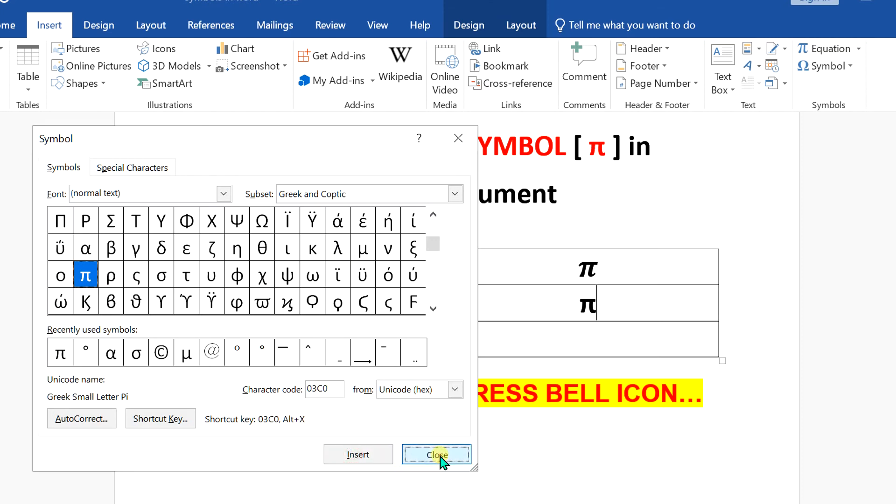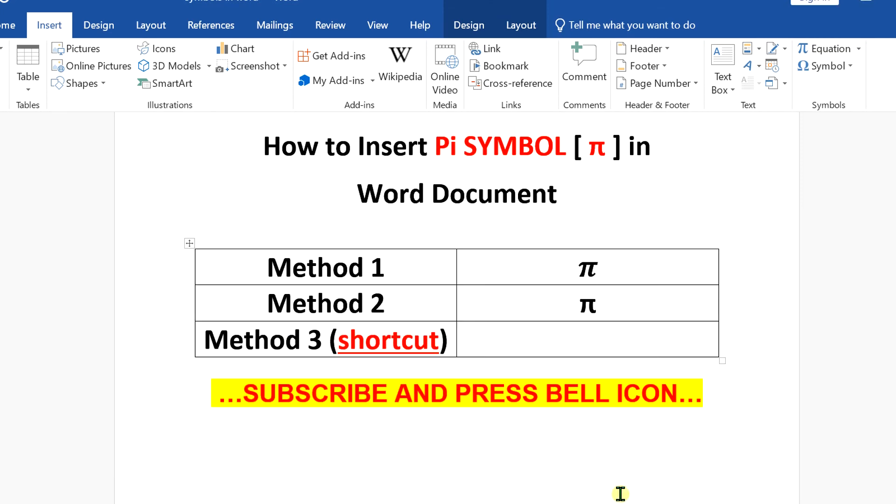Just click on insert to insert the pi symbol. Last method is a shortcut. Enter this code in the document and press alternate X on your keyboard to convert the code to pi symbol.